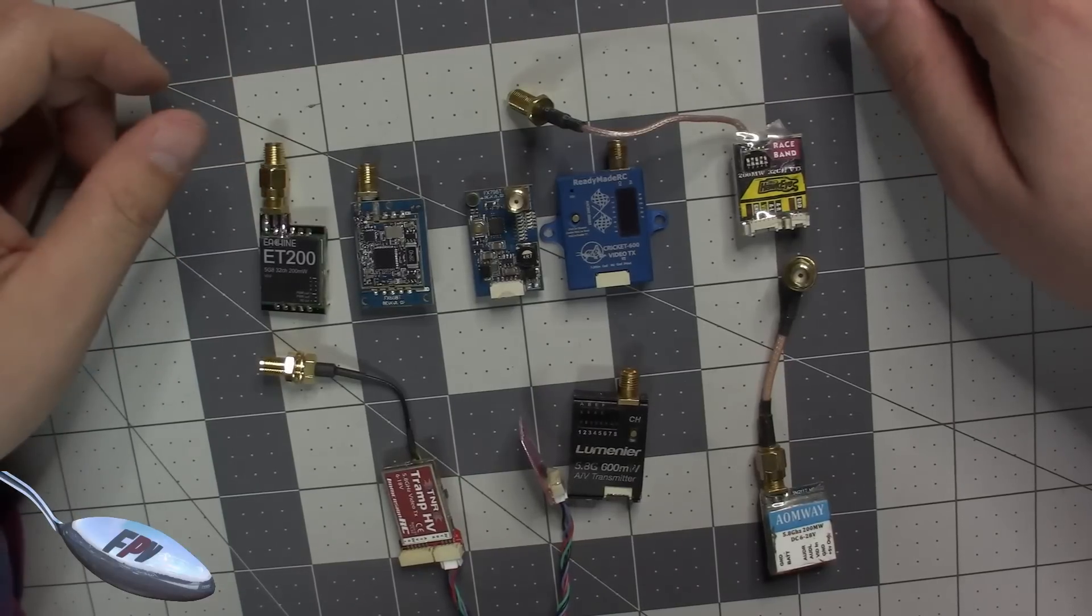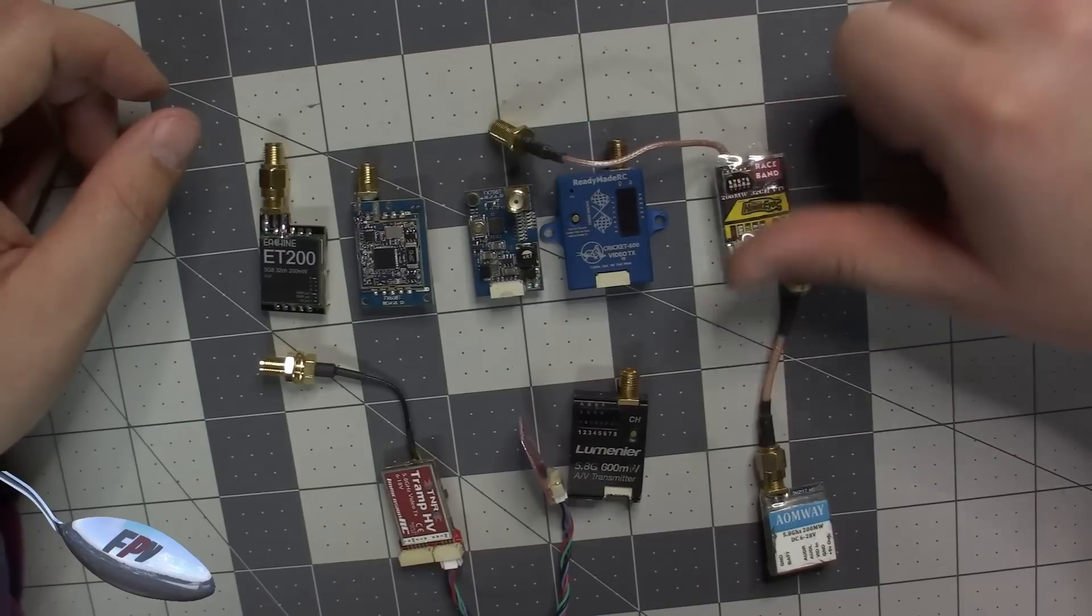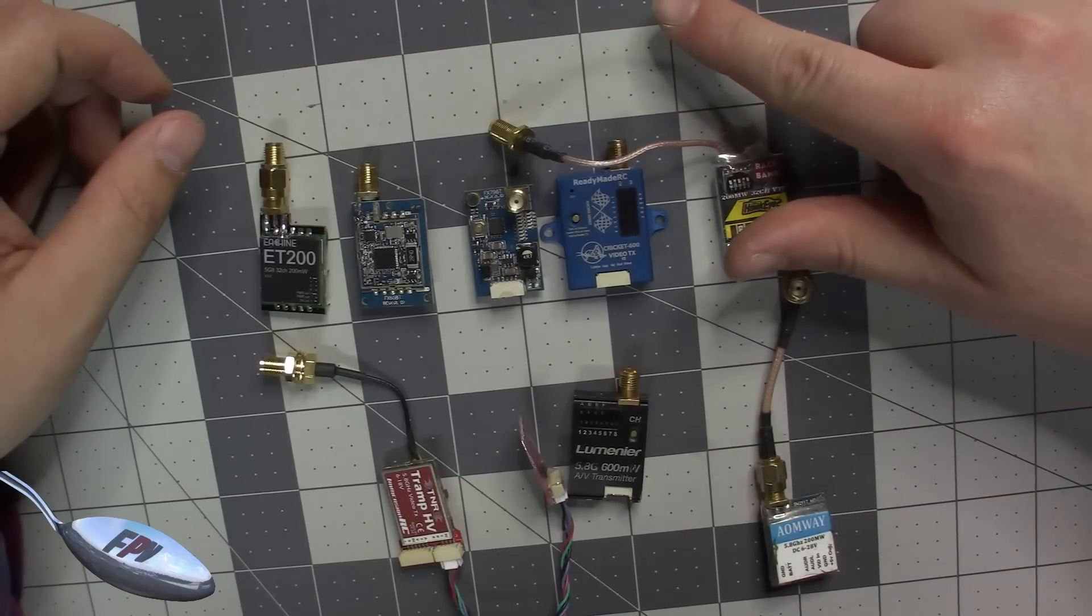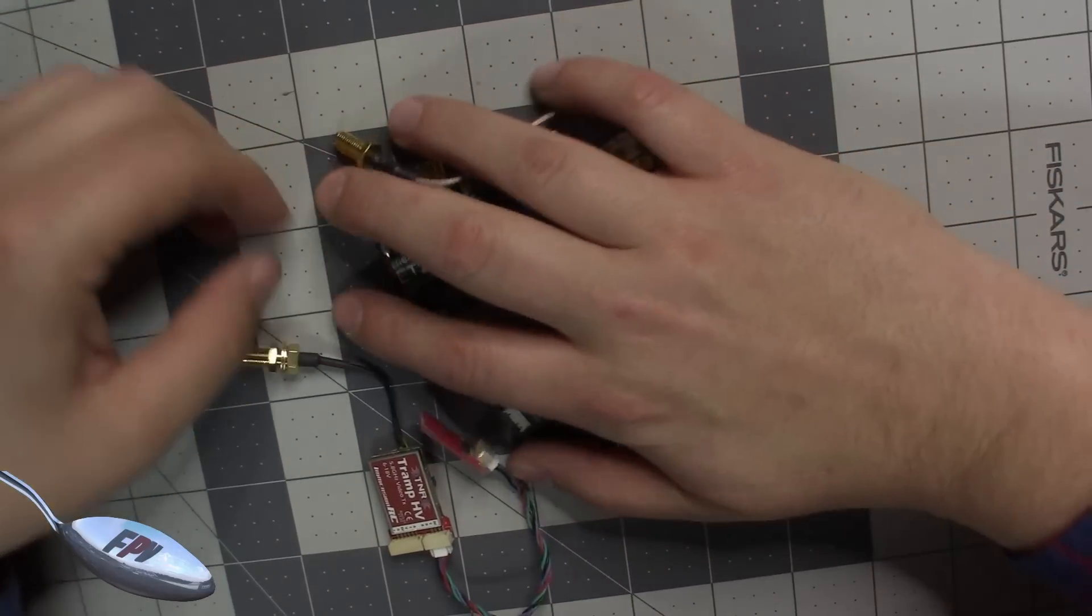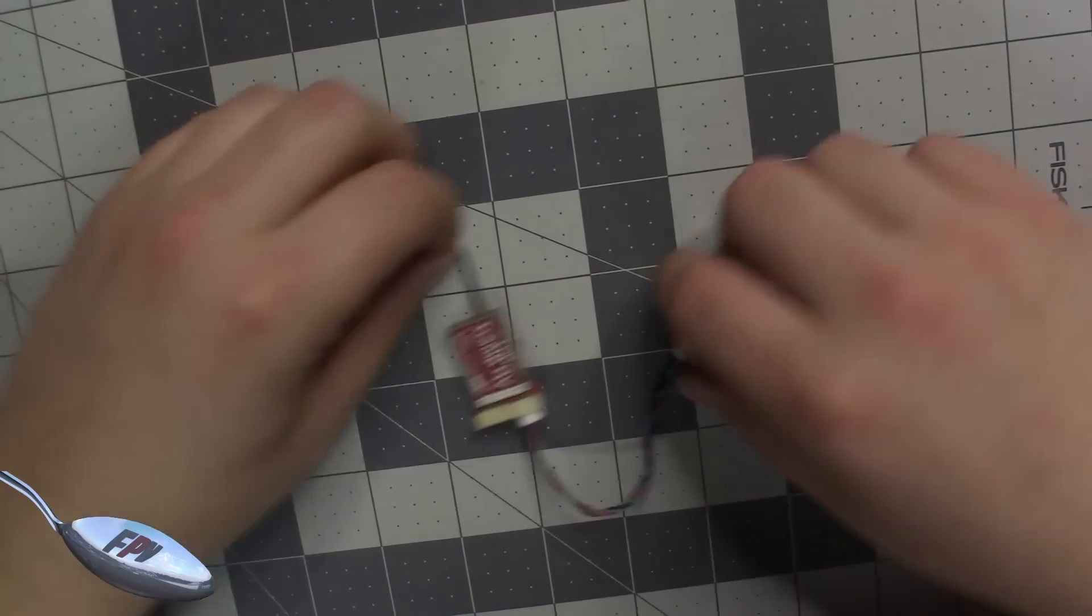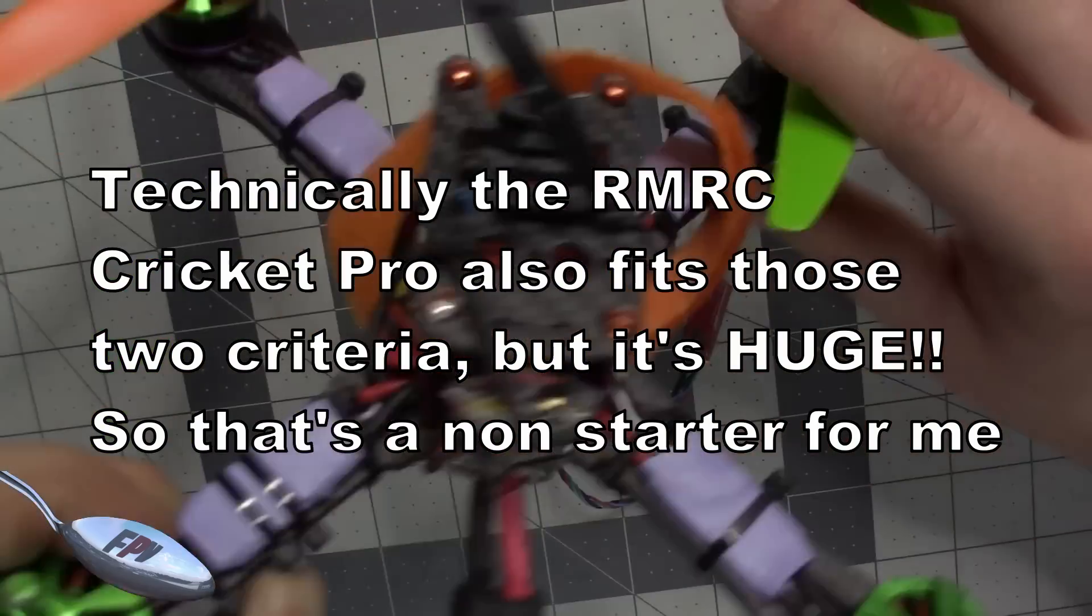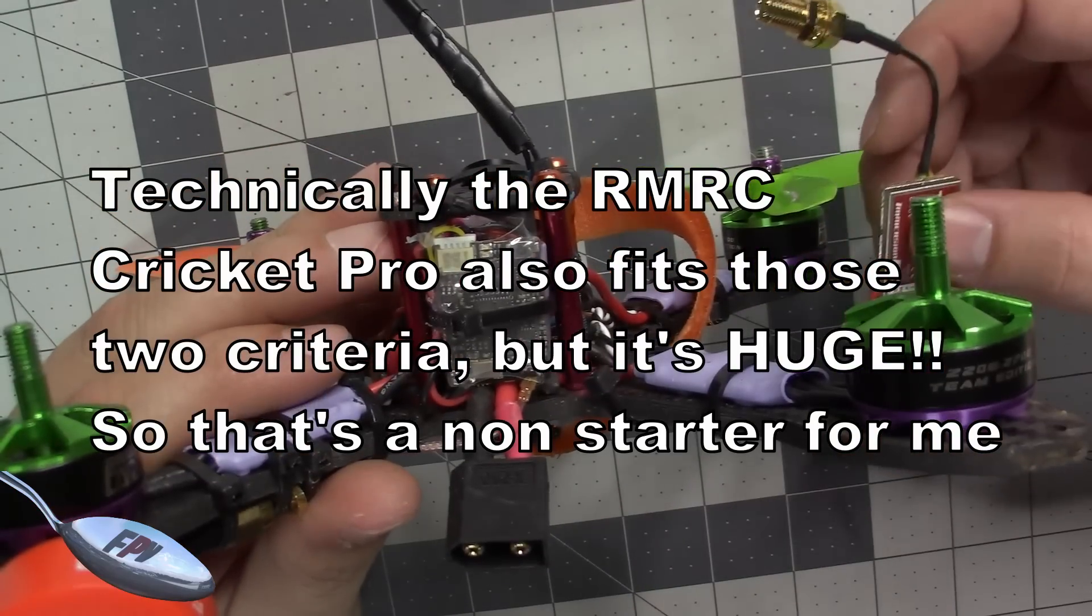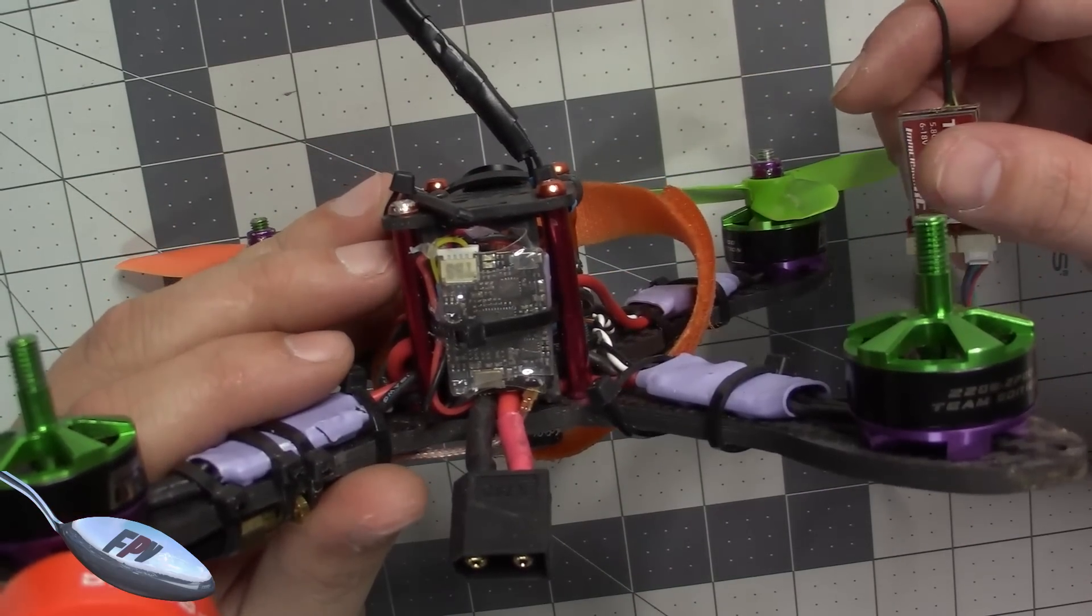Right off the bat, what do I look for when I'm looking for a video transmitter? I look for something that has multiple power outputs and doesn't use dip switches. So right off the bat, all of these go away. And we have the Tramp and we have the TBS Unify V2.